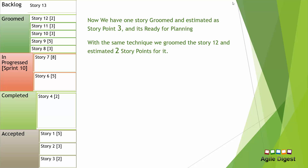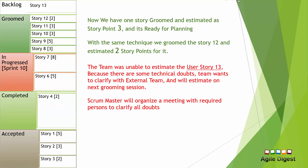Story 11 was estimated at story point 3 and story 12 at story point 2. Story 13, however, we were unable to estimate because there were some technical doubts — the team needed more clarity on the story details. The Scrum Master decided to re-groom it in the next grooming session and will organize a meeting with the involved parties to clarify all the team's doubts.